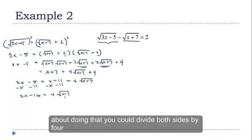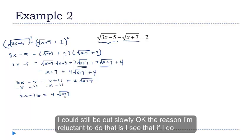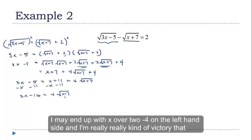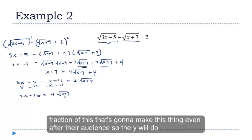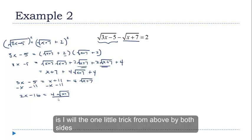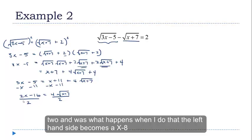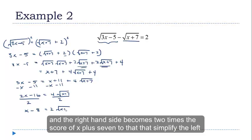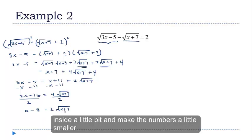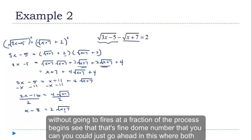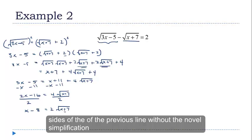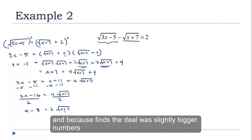We could go ahead and square both sides, making the right-hand side 16 times the quantity x plus 7. Alternatively, I could divide both sides by 4, but that would give x over 2 minus 4 on the left-hand side, which brings in a fraction and makes things messier. Instead, I'll divide both sides by 2. The left-hand side becomes x minus 8, and the right-hand side becomes 2 times the square root of x plus 7. That simplified things a bit. If you didn't see that trick, that's fine — you could square both sides of the previous line without that simplification and be just fine with slightly bigger numbers.